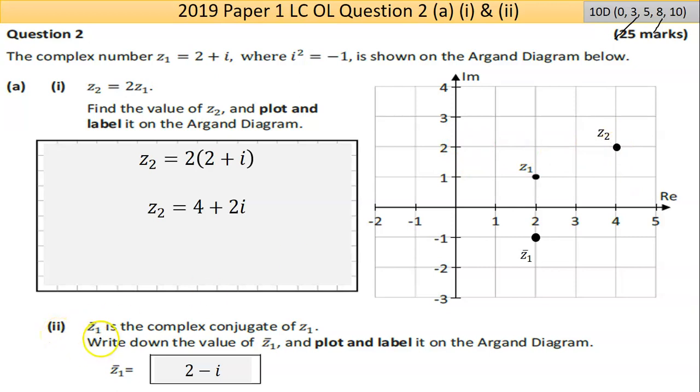They say in the second part of part A, that z bar, or the conjugate of z1, is 2 minus i. So you take your complex number, 2 plus i, and you're basically just changing the sign in front of the imaginary part. So it was plus, now it's minus. The conjugate is always directly below or above the complex number and will be the same distance away from the origin. So the only place it can be is the point directly down here. So it's 2 minus i, and I've labeled that as z bar. They do say label it, so it's important to make sure it is labeled.